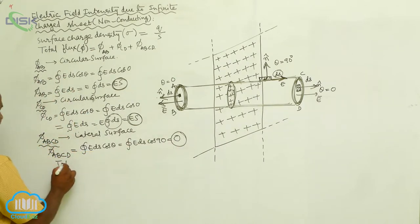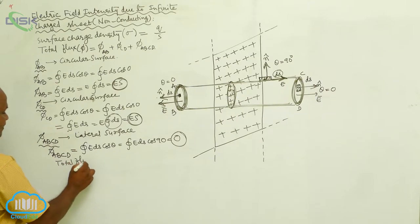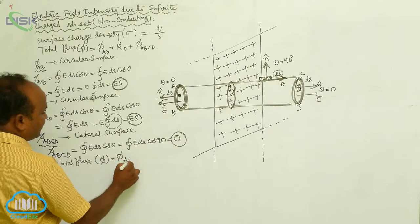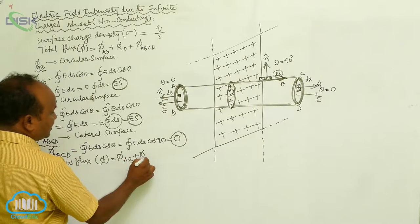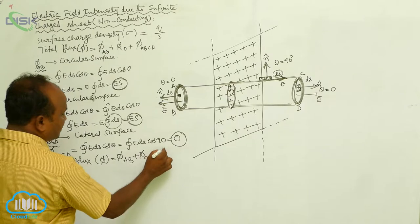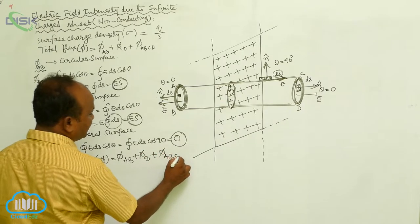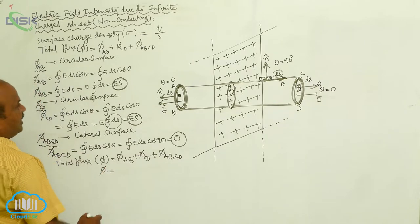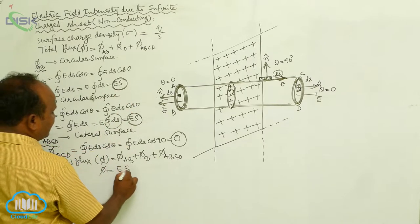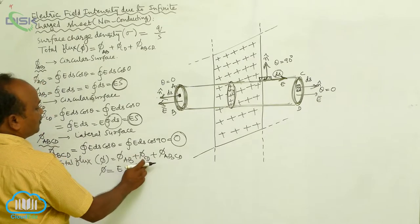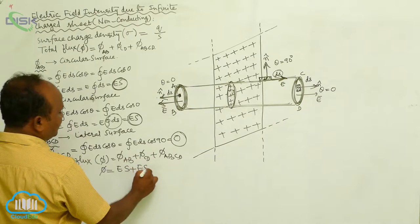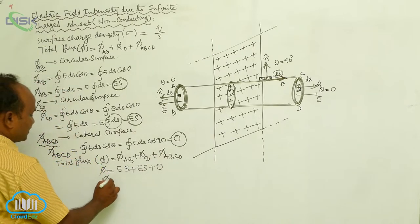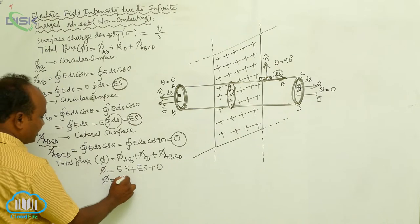Therefore, what is the total flux? Total flux phi equals flux passing through AB, plus flux passing through CD, plus flux passing through lateral surface ABCD. Flux through AB equals ES, flux through CD also equals ES, and flux through lateral surface ABCD is 0. Therefore, total flux equals 2ES.